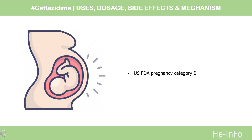Safety advice. U.S. FDA Pregnancy Category B. Animal reproduction studies have failed to demonstrate a risk to the fetus and there are no adequate and well-controlled studies in pregnant women. This drug should be used during pregnancy only if the benefit outweighs the risk to the fetus.